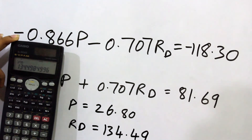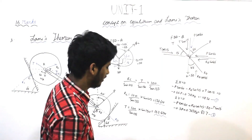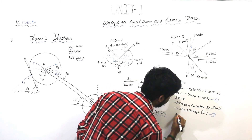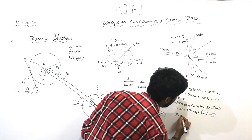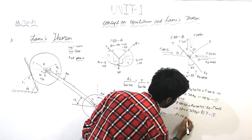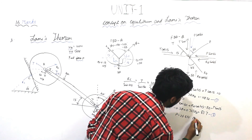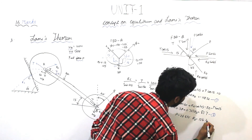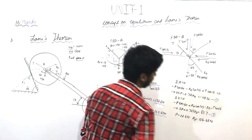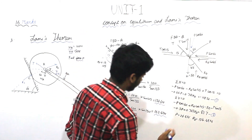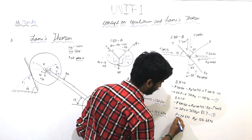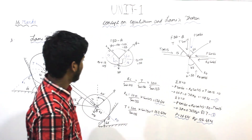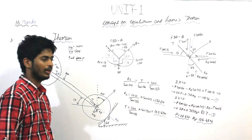So finally, P is equal to 26.80 Newton and Rd is equal to 134.49 Newton. We are done. Thank you.